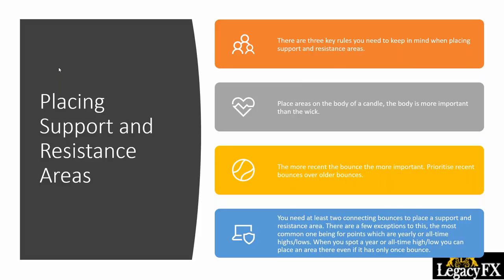There are three key rules to keep in mind when placing support and resistance. First, the body of the candle is more important than the wick. Second, the more recent the bounce, the more important it is — prioritize recent bounces over older ones. Third, you need at least two connecting bounces to place a support or resistance line.